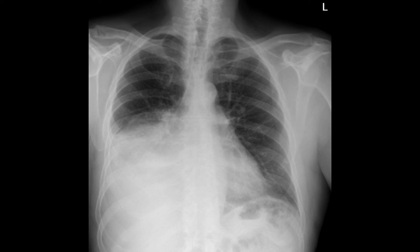What are the causes of pleural effusion? There are unilateral and bilateral causes. Unilateral causes include pulmonary tuberculosis, pneumonia, and bronchial carcinoma. Bilateral causes include congestive cardiac failure, liver cirrhosis, and nephrotic syndrome.